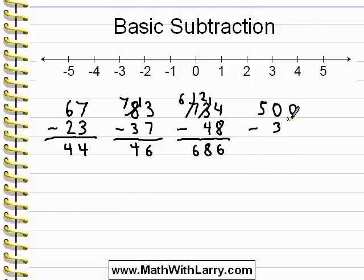Now, the first thing we have to do is start on the right. Zero minus 4. We can't do zero minus 4, so we have to borrow from the column on the left. Now, up until now, we've been able to do that. But now we have a zero here, and we can't borrow from the zero.